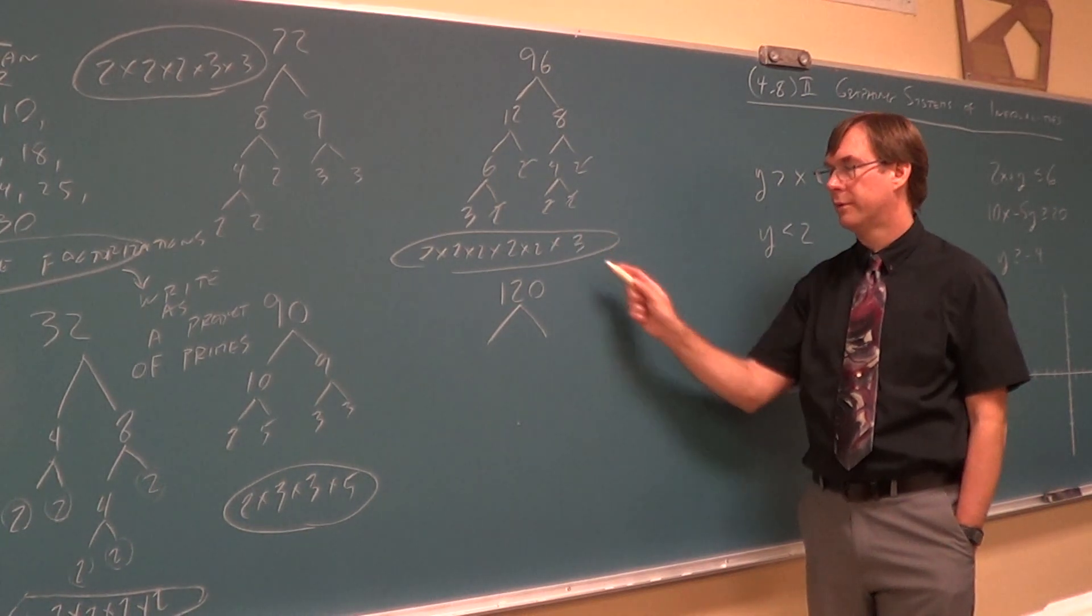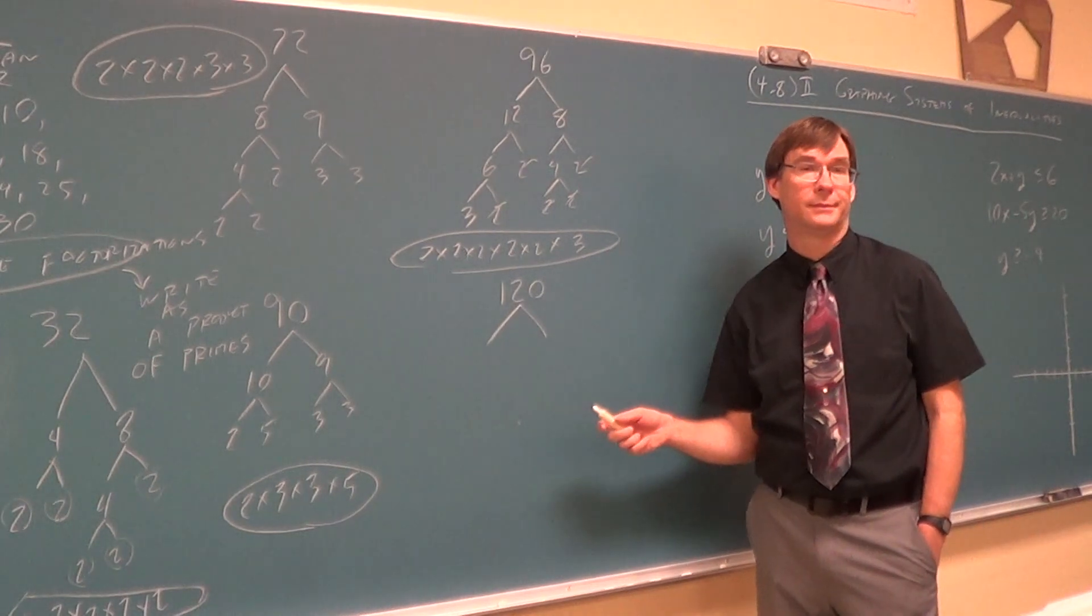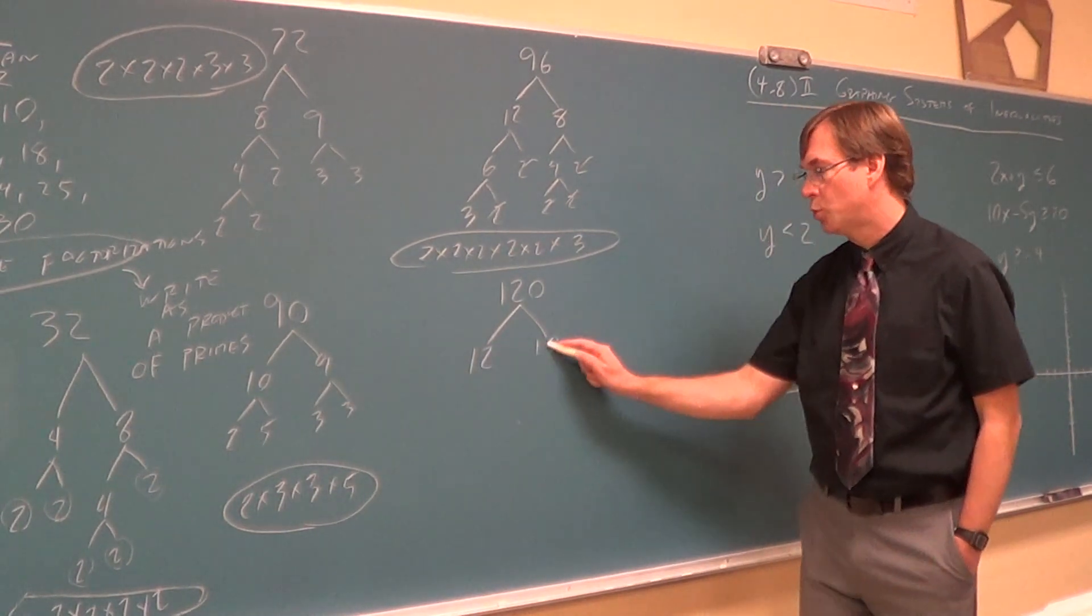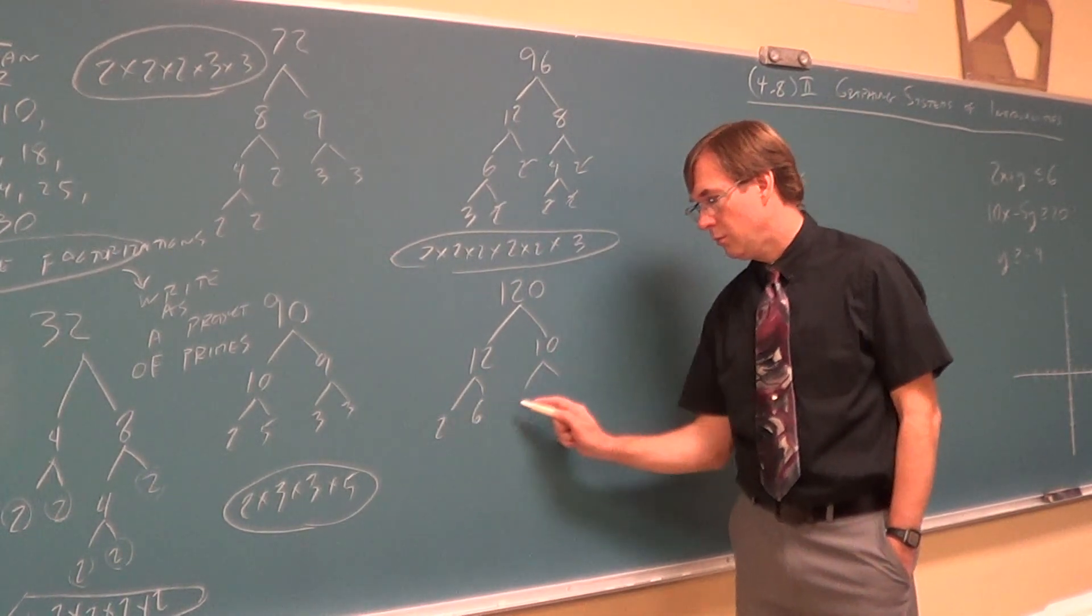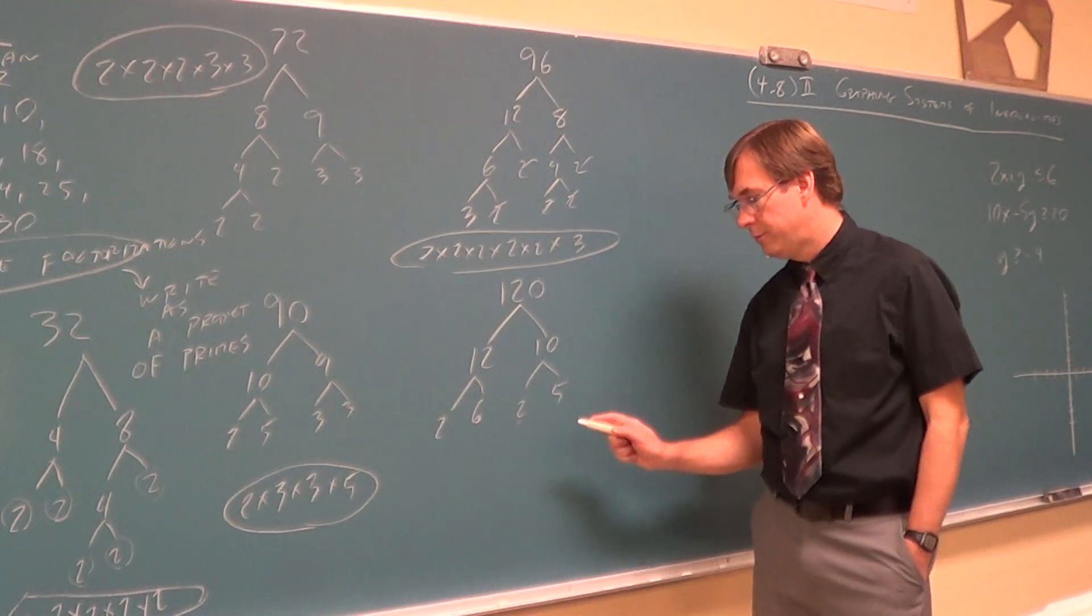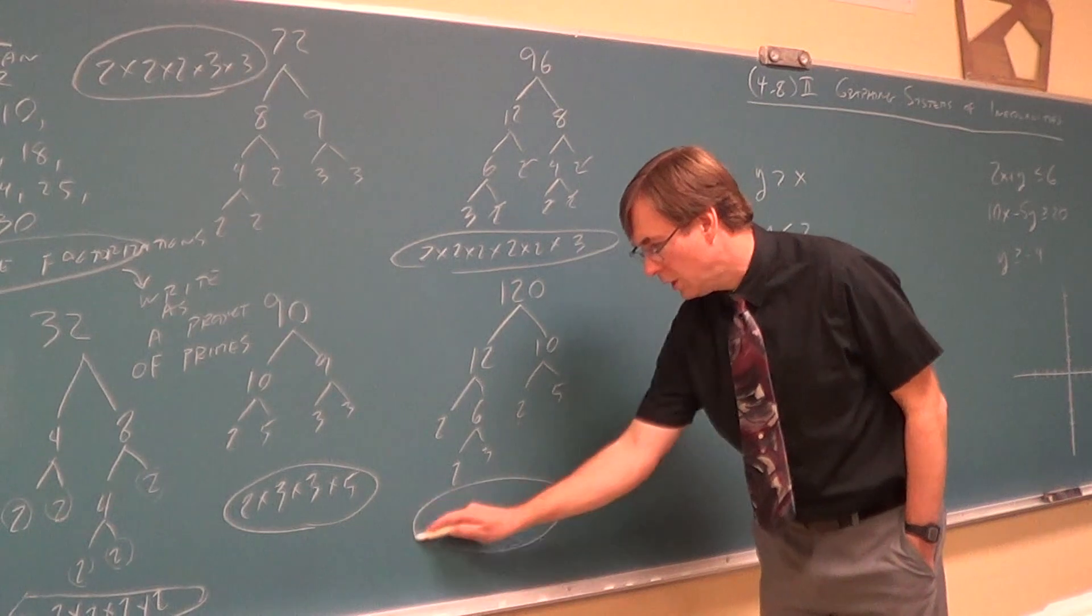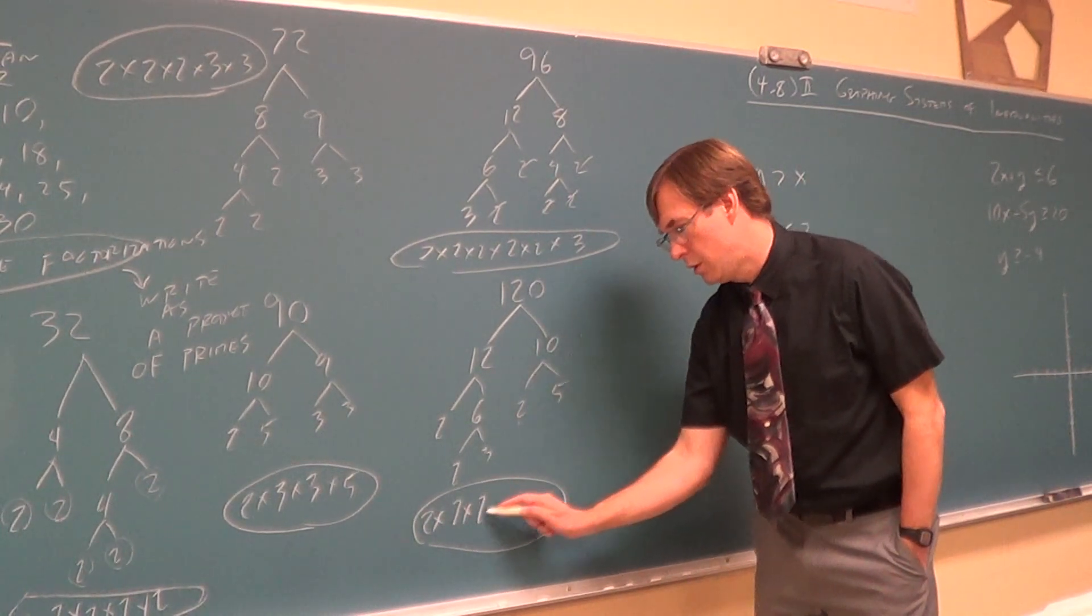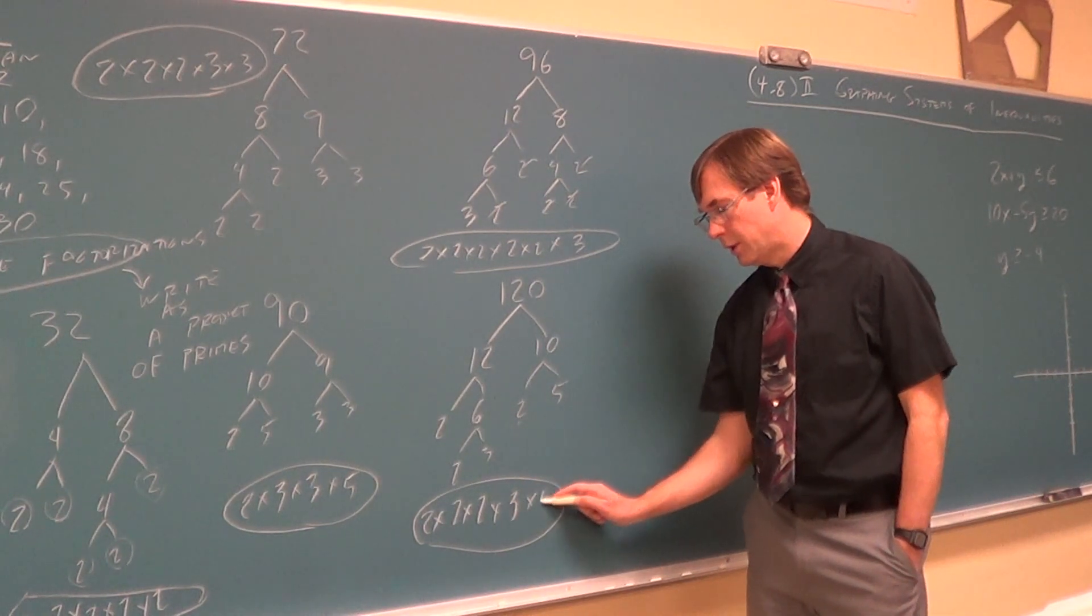One-twenty. Twelve times ten. Twelve and ten is a nice even split. Two, six. Two, five. Agreed. Split the six into two or three. Agreed. We're done. Two count. Three. Three. Who else? One, three. One, five. Agreed.